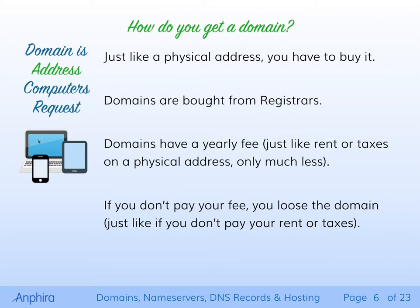How do you get a domain on the internet? Well, just like a physical address, you have to go buy it from someone. And who you buy it from is called a registrar. There are a number of different registrars on the internet. Just like a physical address would have rent or taxes or other fees, a domain has a yearly fee. This fee is typically in the range of $10 to $20 — it varies, but that's the typical range for most domains. And just like a physical address, if you don't pay your rent or your taxes, you lose it. So you have to pay your yearly fee to keep your domain.